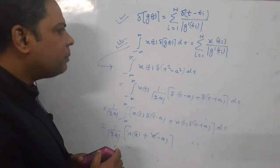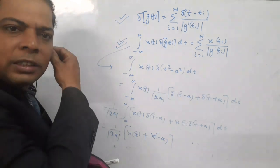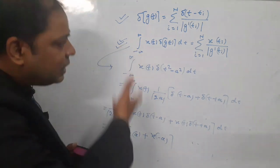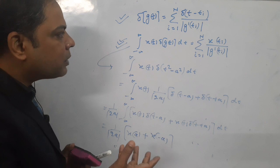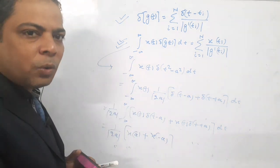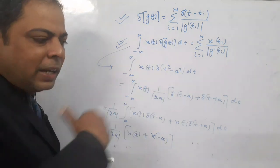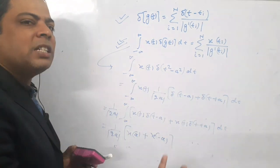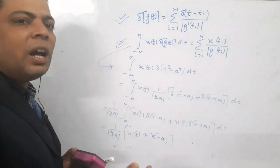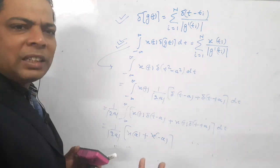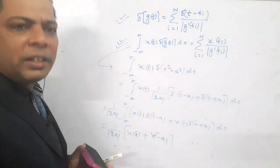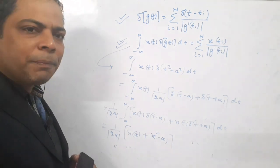You have to remember all these properties of the doublet function. In this class, I have discussed not only properties of the doublet function but also some typical properties of the impulse — the combining properties of impulse and doublet function — so that you can solve questions related to impulse signals and doublet signals, or signals related to impulse or doublet. Thank you.